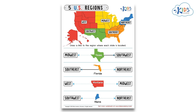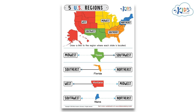Next, look at Montana. In which region can you find the state of Montana? The West region. Good answer! Now, let's find Maine. Where is it? Yes! Maine is in the Northeast region.